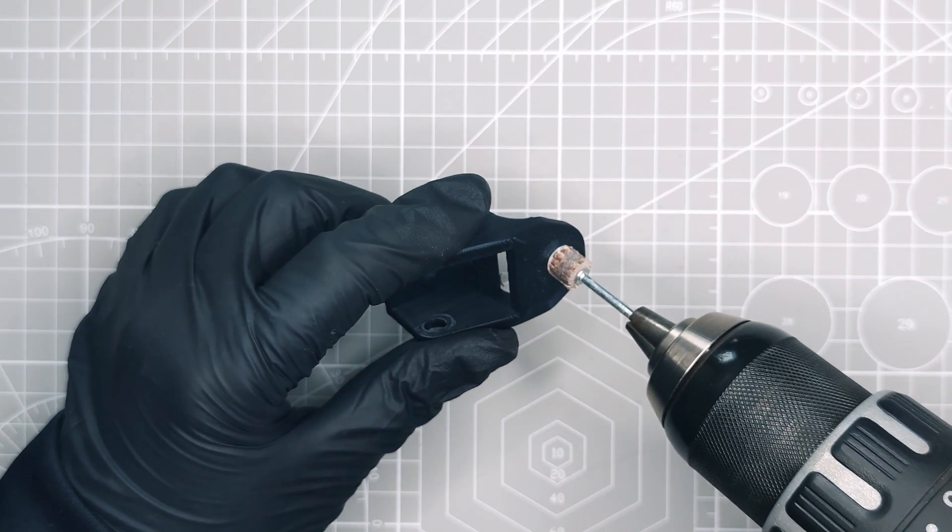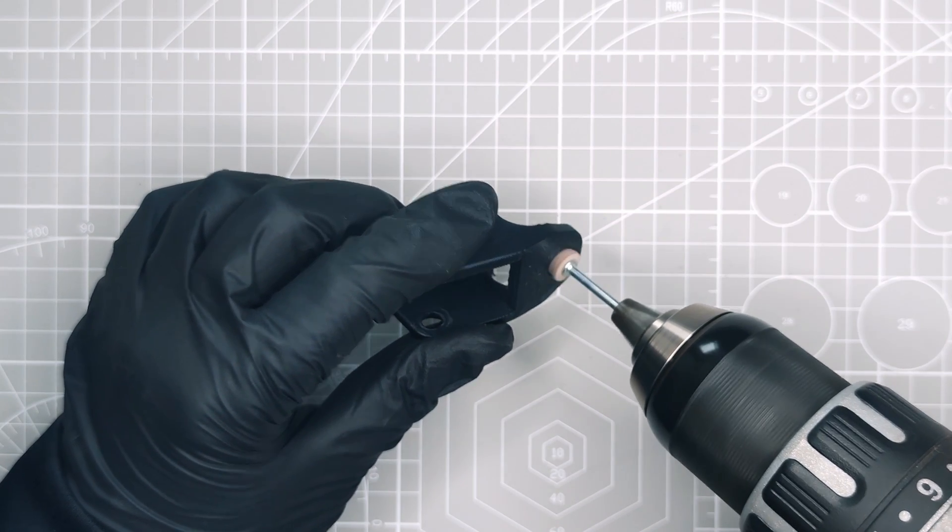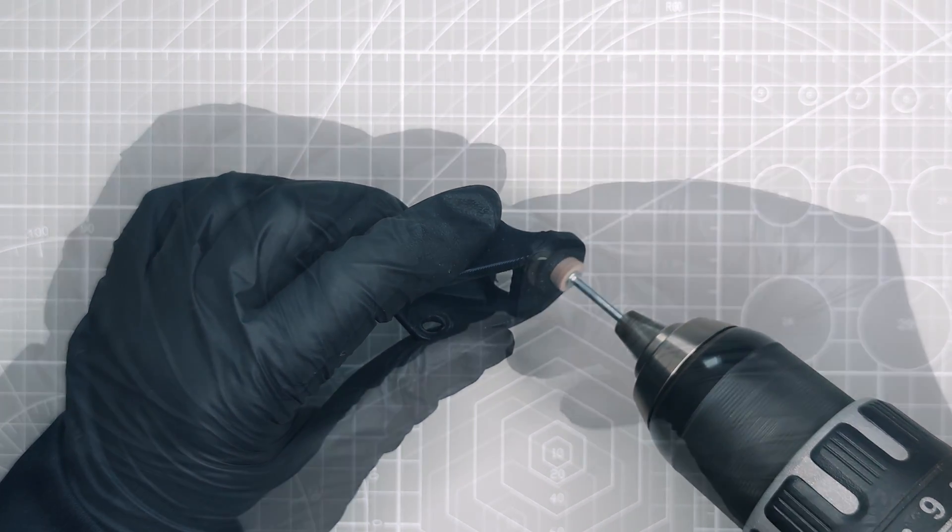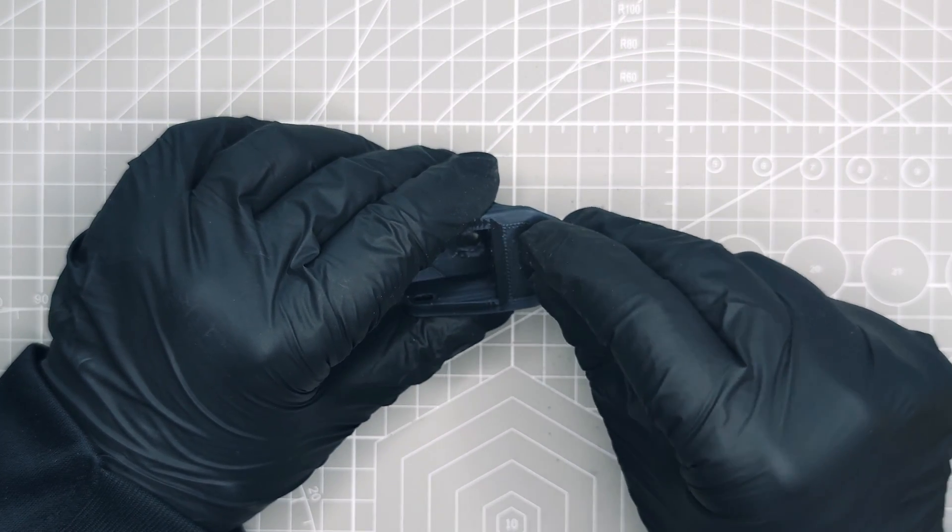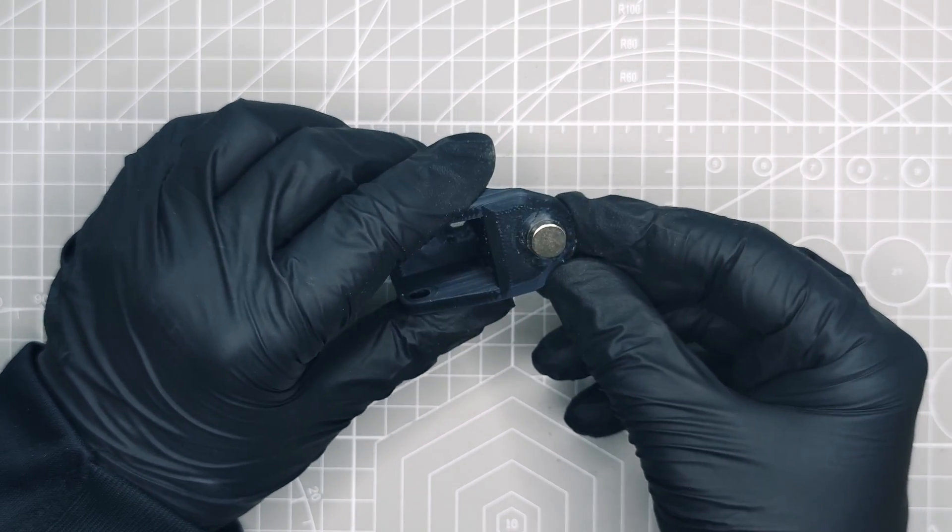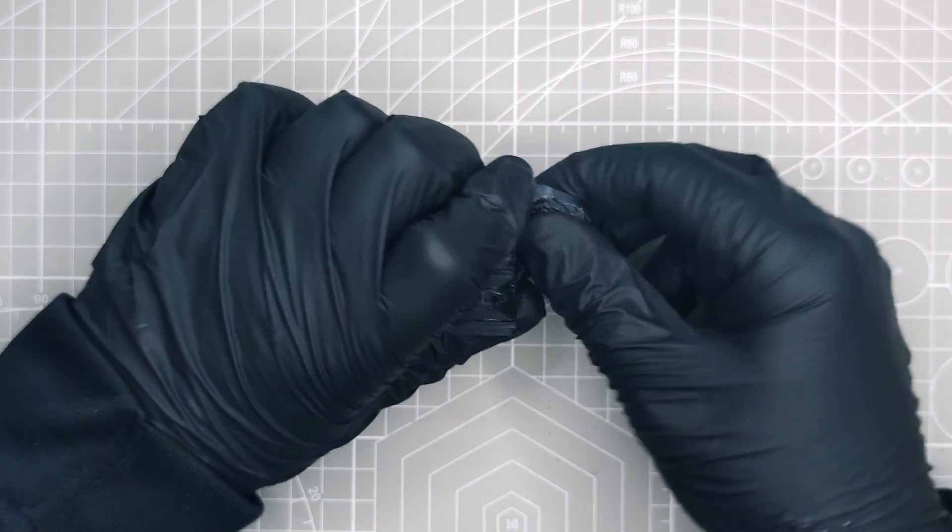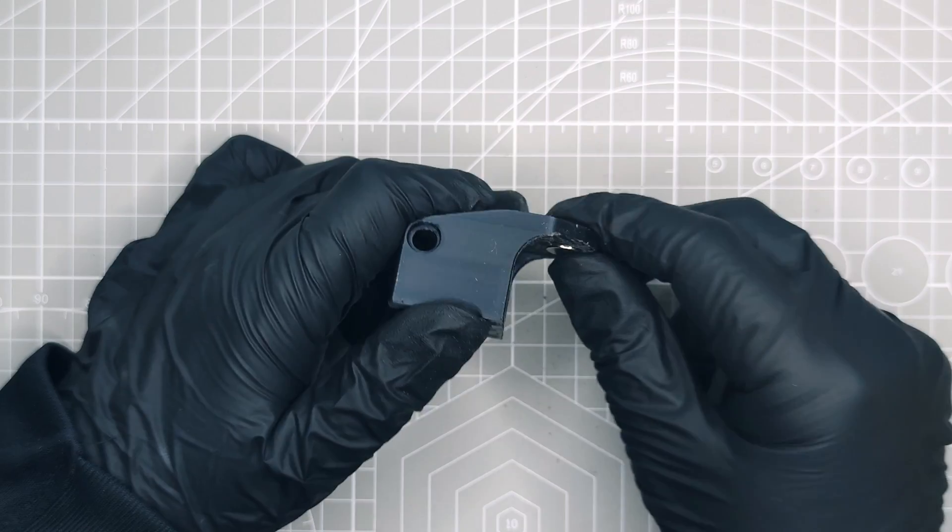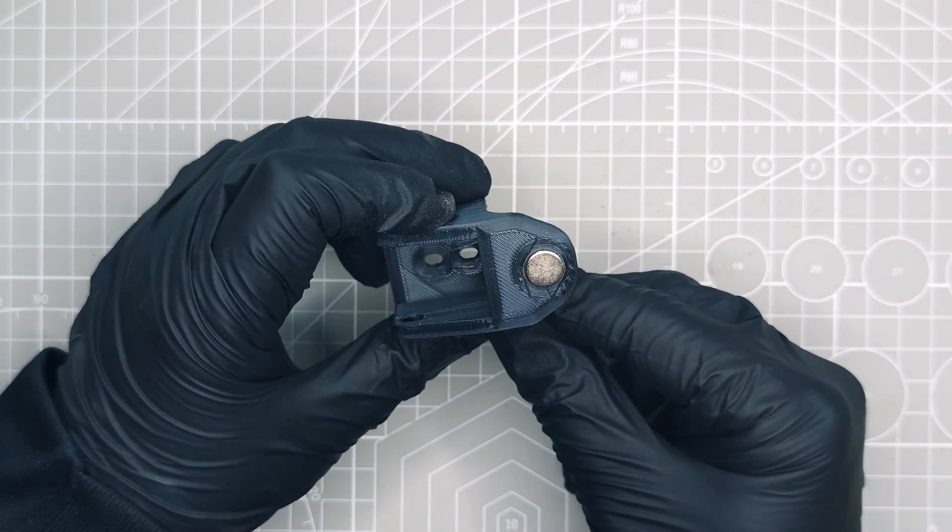In order to fix the hole for the magnet in the base, I use a small diameter sanding flap wheel. After sanding at a moderately slow speed for a few seconds, we can test the magnet again. It is now a nice and snug fit, but the hole is loose enough so that it does not put any pressure on the printed part.